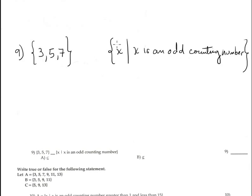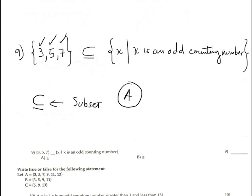Number 9 is, again, using this symbol, subset. Let me see this element: 3, 5, and 7. The other set is bigger, is the odd counting numbers. So 3 is odd counting number, 5 is odd counting number, and 7 is odd counting number. Therefore, the set is okay. It's A, it's correct, option A, and it's subset.